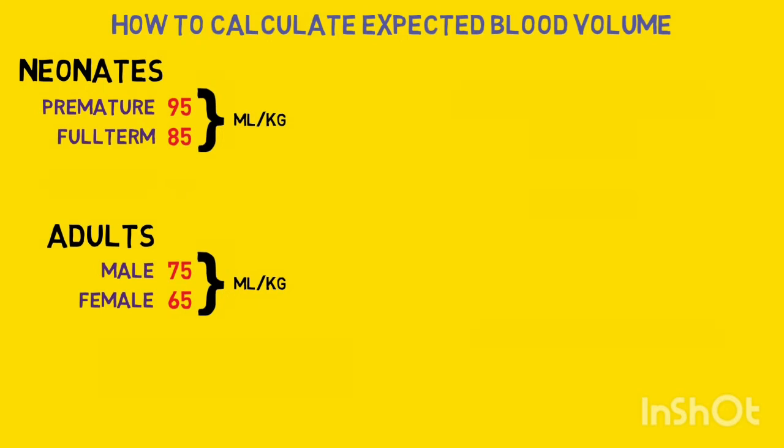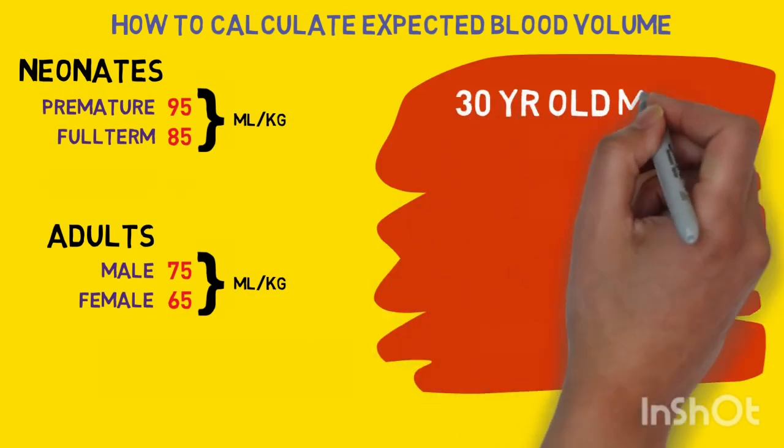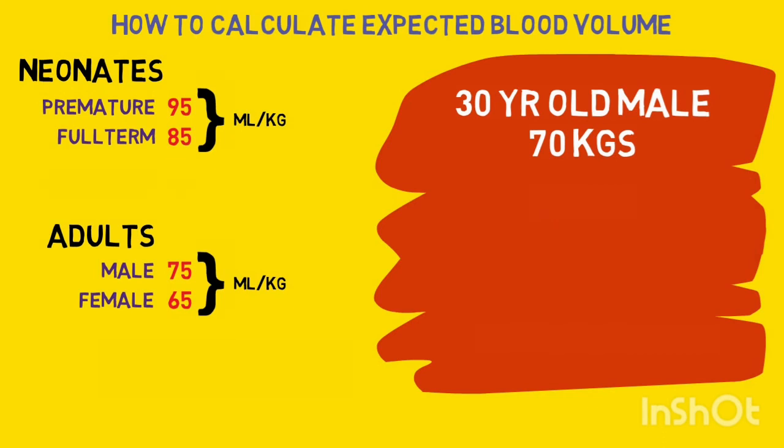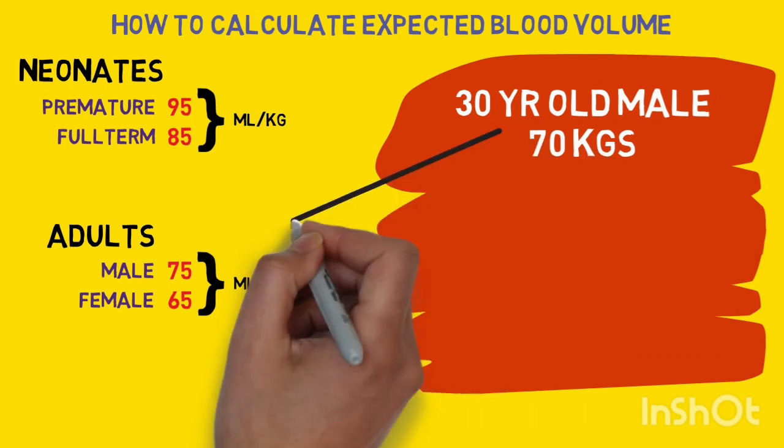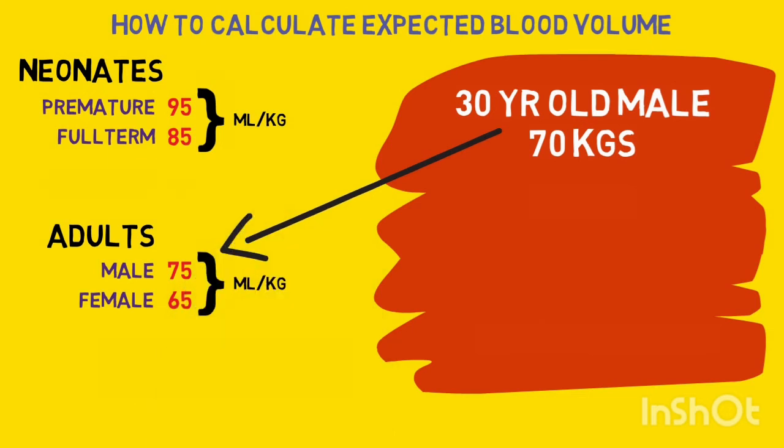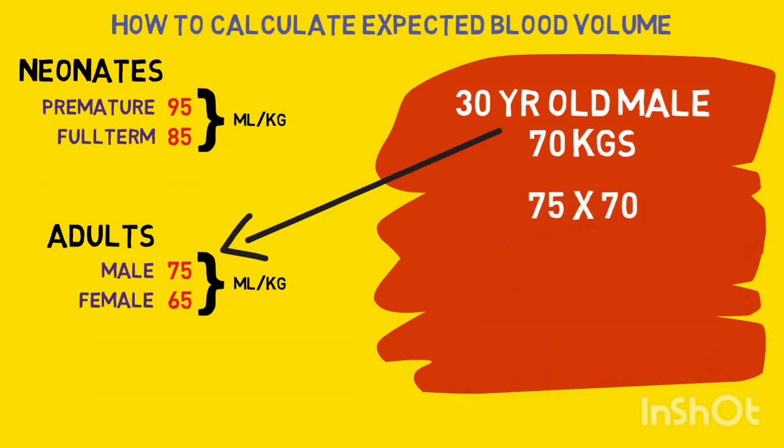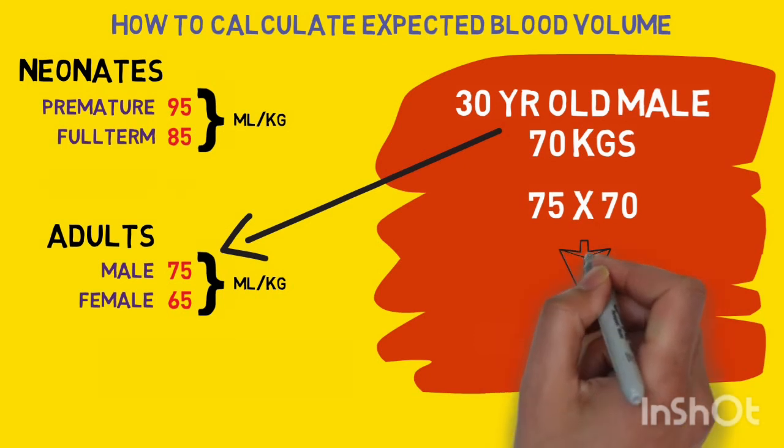So, if we take an example of a 30 year old male weighing 70 kilograms, the person in question is of course an adult and a male subject. So, we have to choose a fixed number of 75 and then we multiply that with 70 that is the weight of the person and we arrived at 5250 ml of blood.